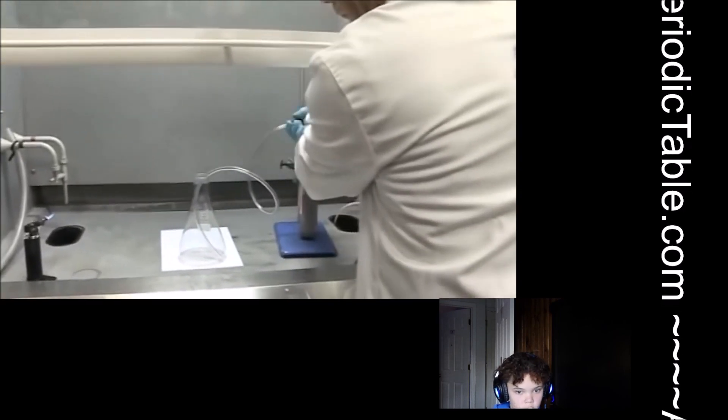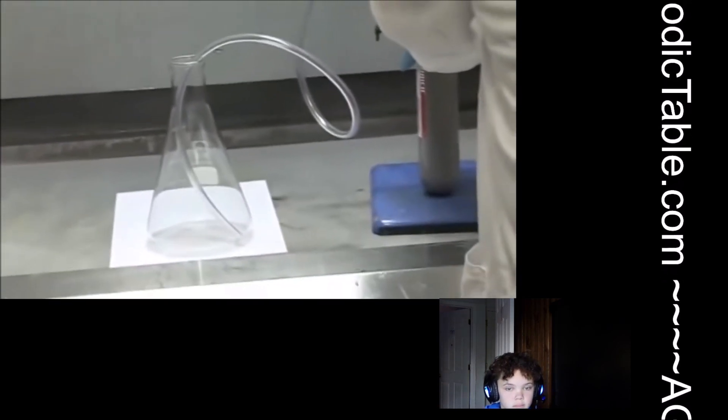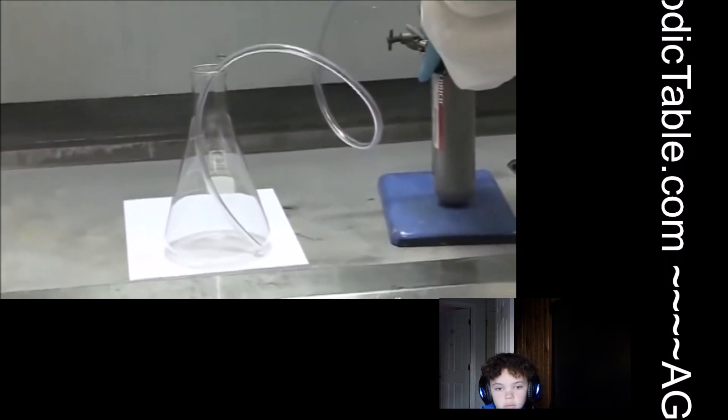Okay, so Neil is about to open the cylinder of Chlorine to allow some Chlorine gas to leak through the pipe into the flask in the fume hood.